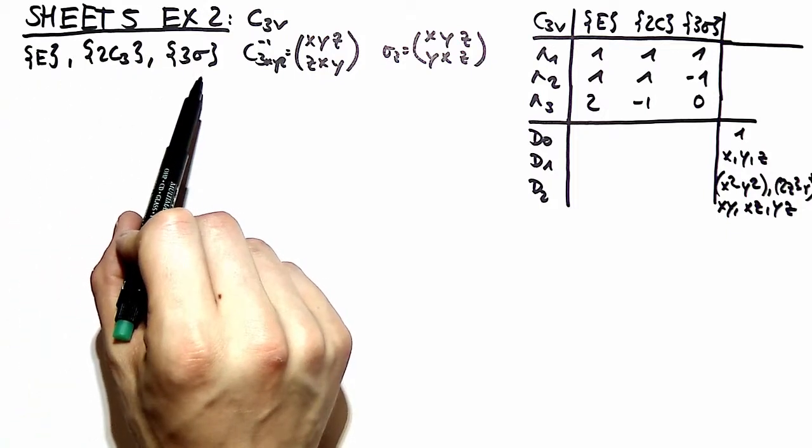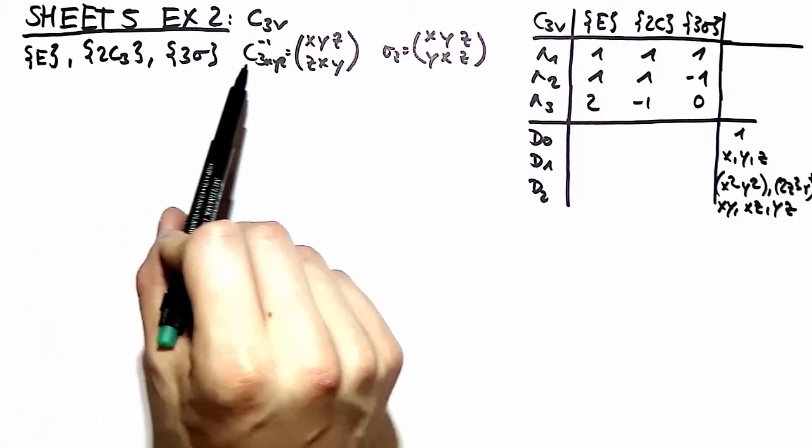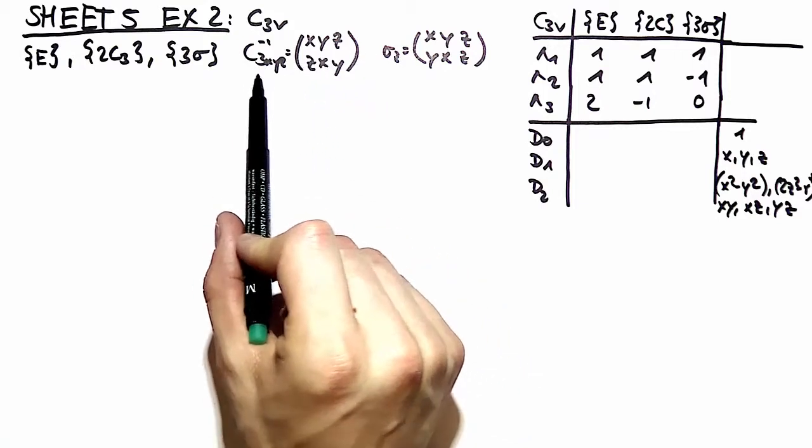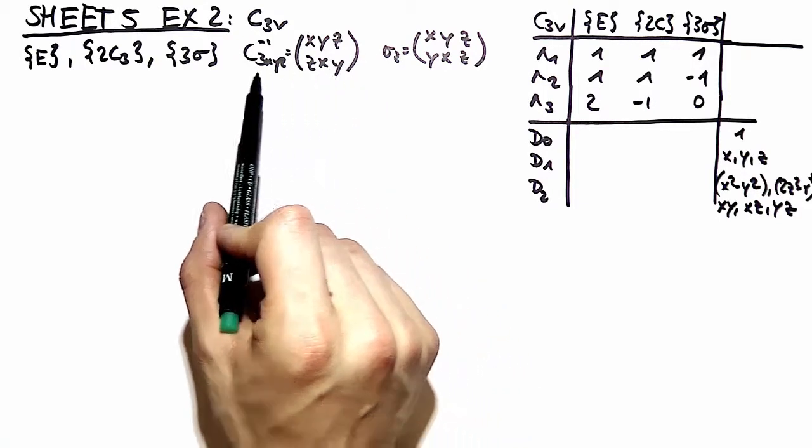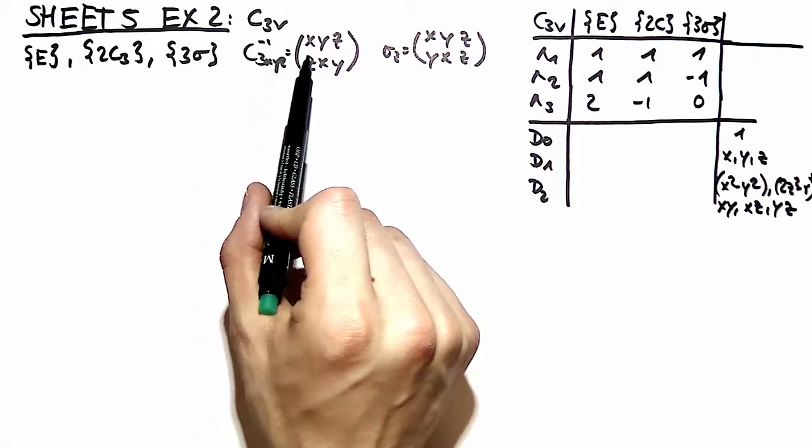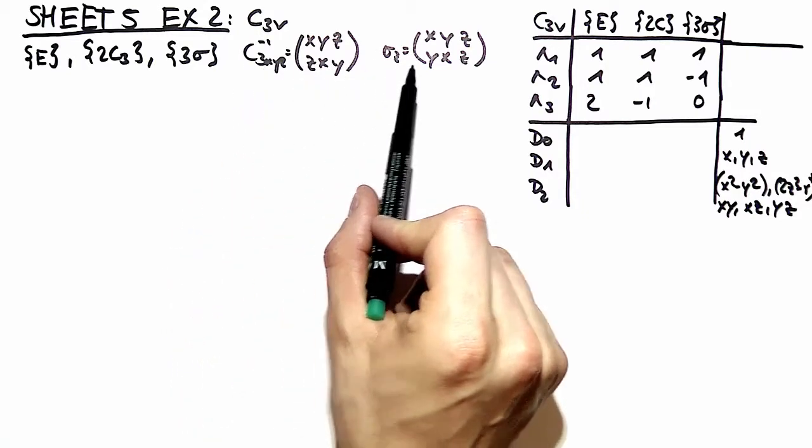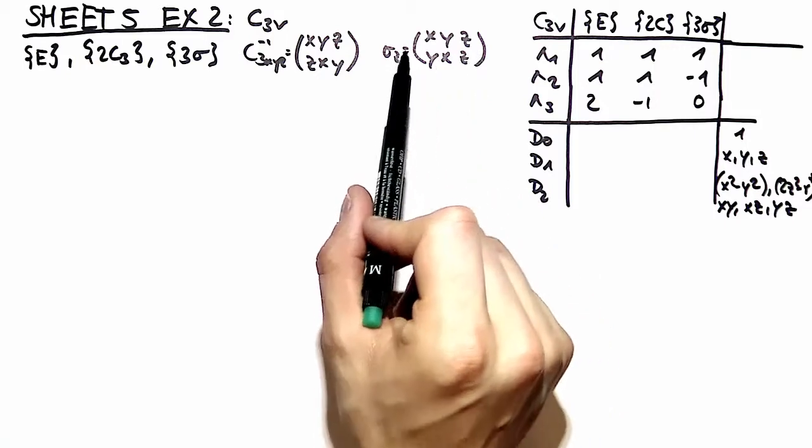C3v consists out of these three conjugacy classes. Just as an example, here we have two elements and how the coordinates transform as a permutation, C3 to the minus one for example here and sigma z, the mirror plane over here.